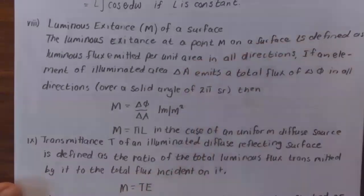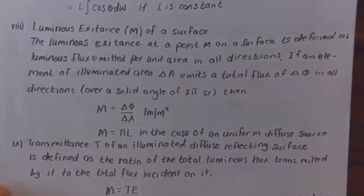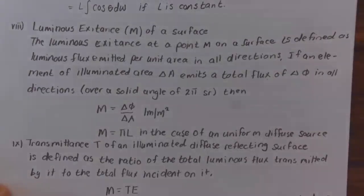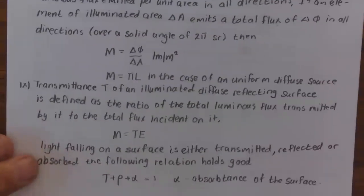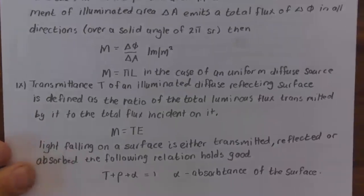The luminous excitance M of a surface is defined at a point on the surface as the luminous flux emitted per unit area in all directions. If an illuminated element ΔA emits a total flux of Δφ in all directions over a solid angle of 2π steradians, then M = Δφ/ΔA, and M = π·L in the case of a uniform diffuse source.